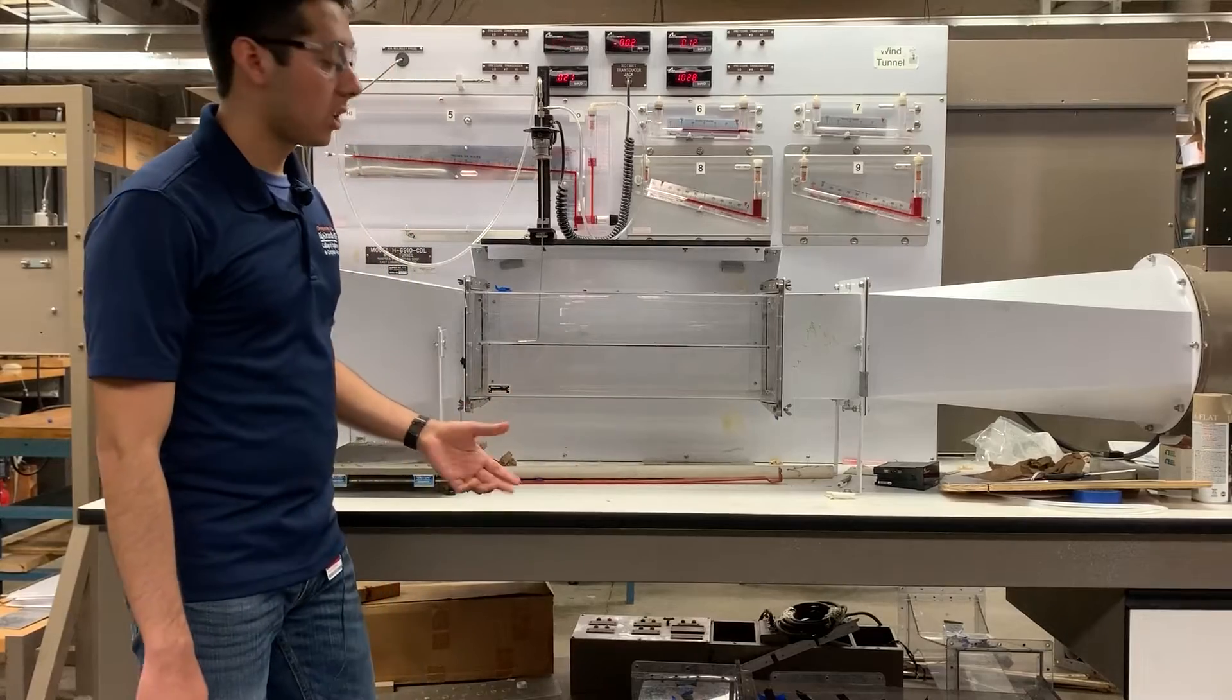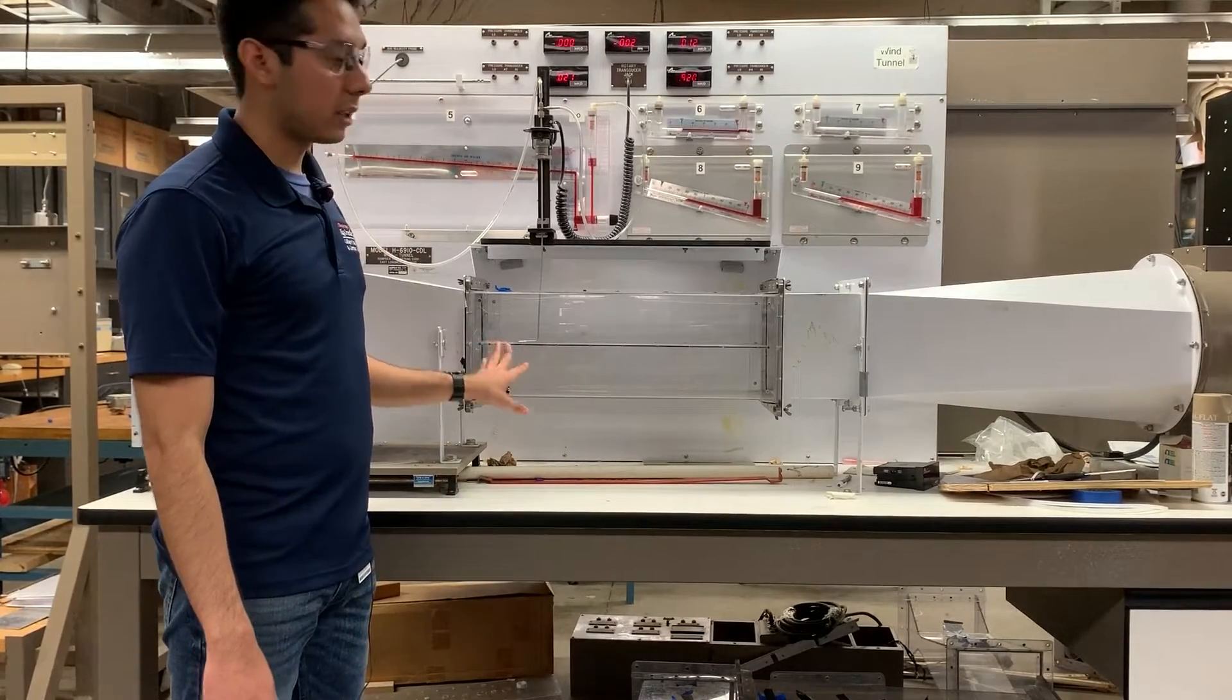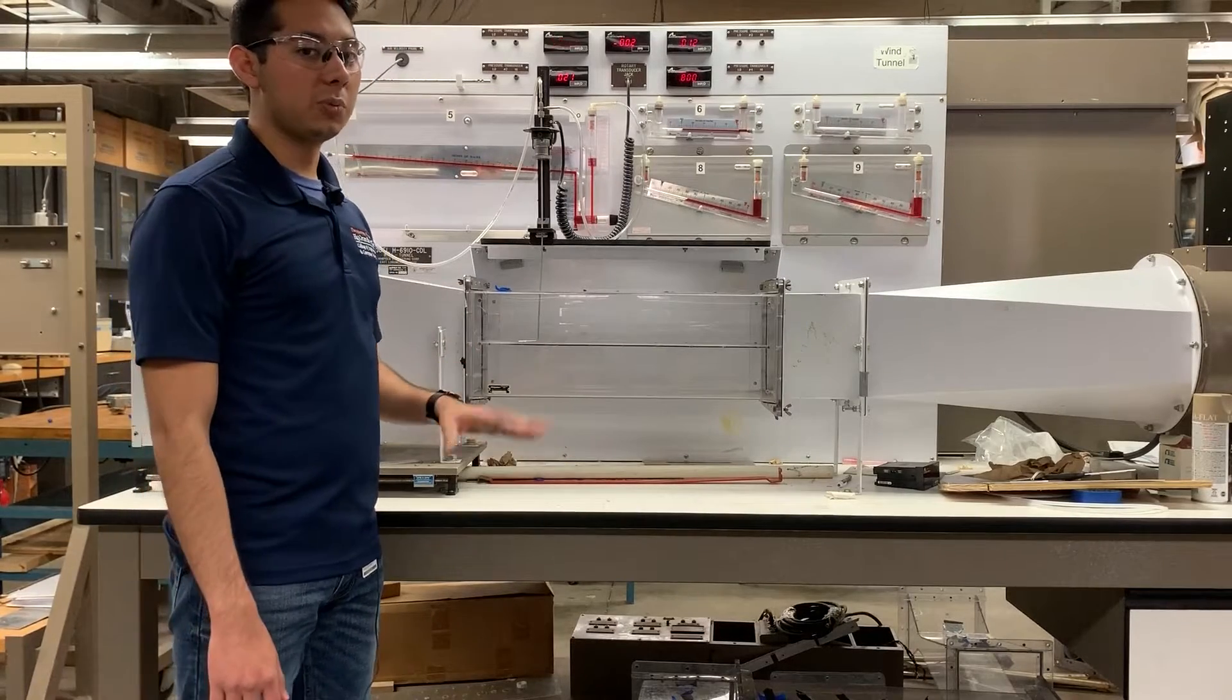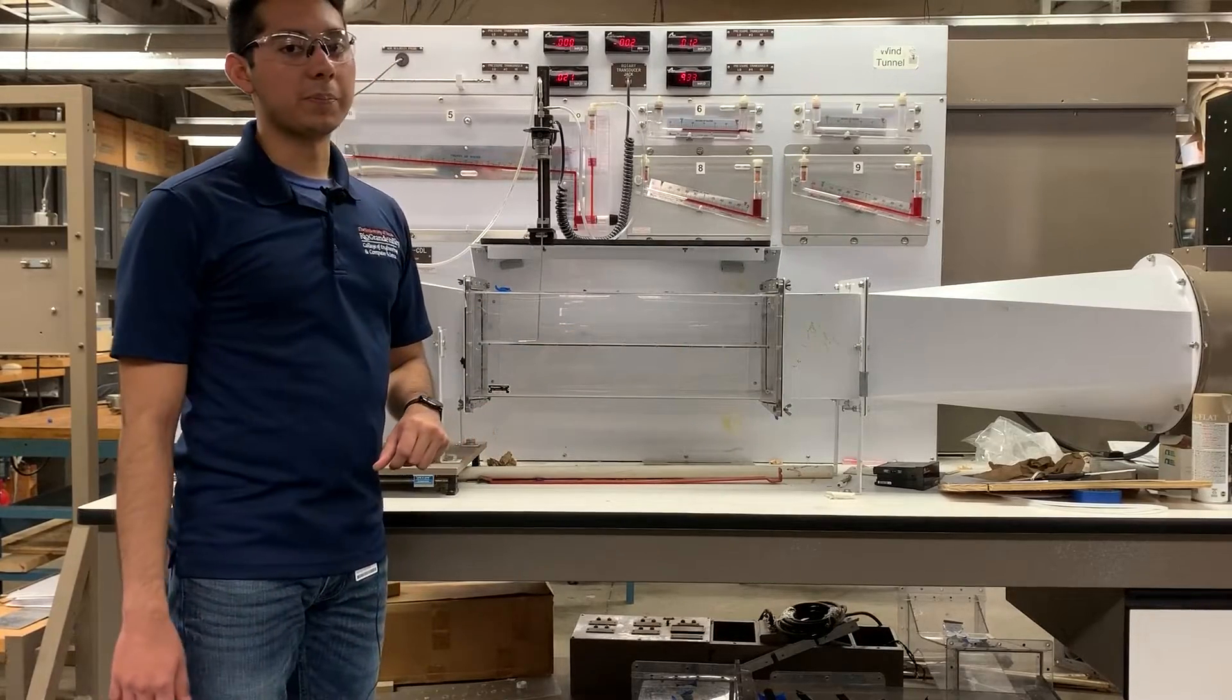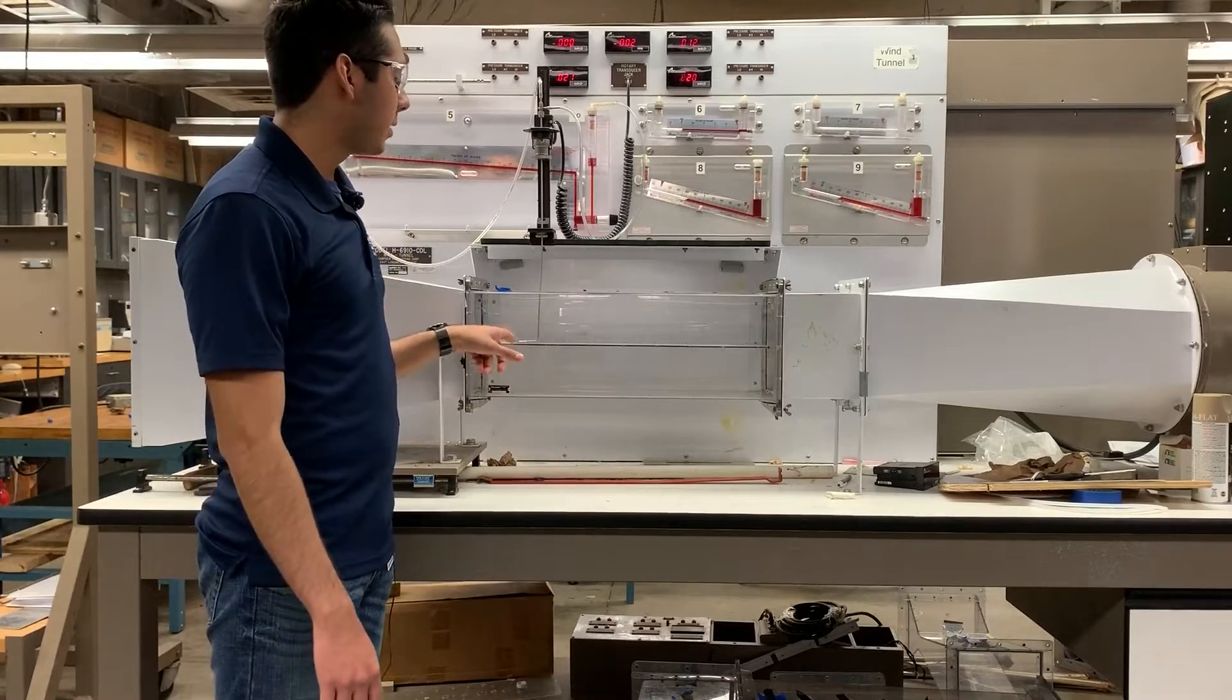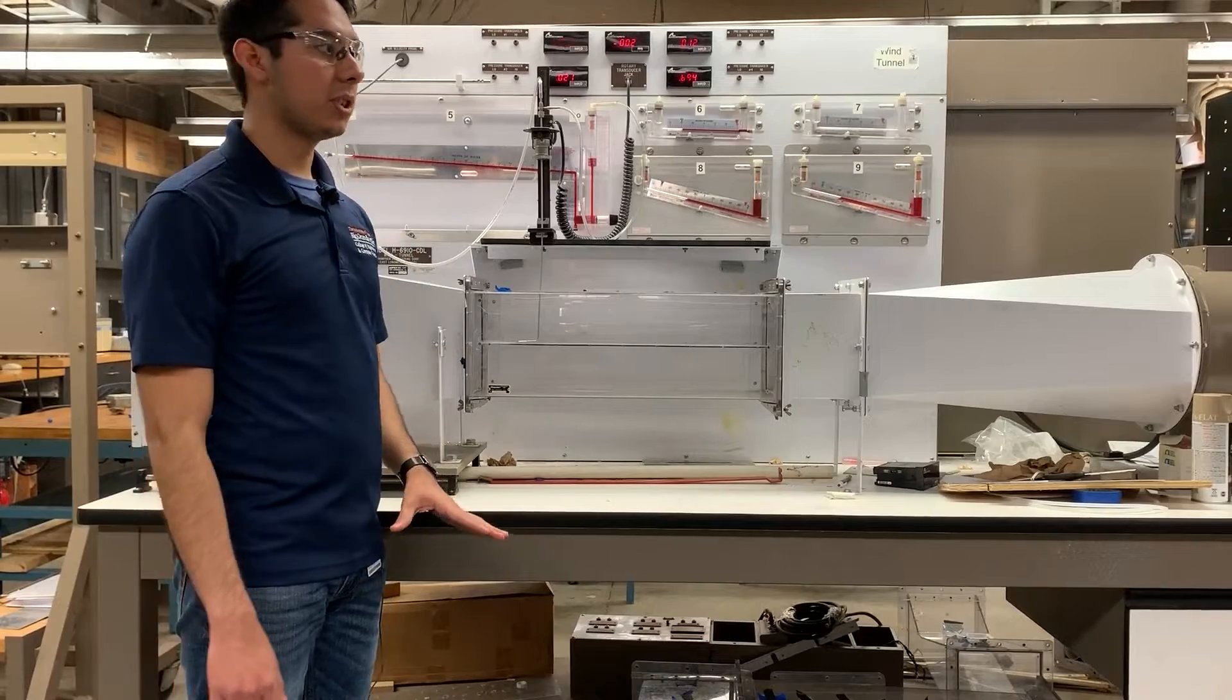We're going to be doing this for two ducts. Over here we have the rough duct that has that rough surface on the entrance, and then we're going to repeat the same process for the smooth duct, which has a smoother surface in the middle part. Once we do that, we're going to do analysis to determine the boundary layer that forms on this duct.